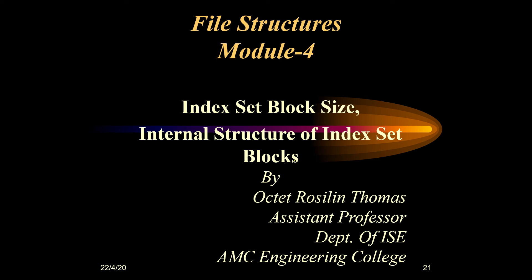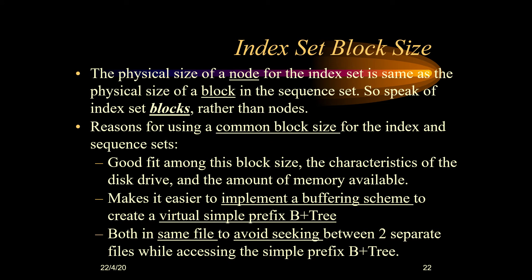In this section we look at index set block size and the internal structure of index set blocks. Block size is important when considering the index set because the size of every node and the size of the blocks inside the sequence set of a B+ tree are almost the same. Using the same block size for both the nodes and the B+ tree is a good fit because it fits more records, which helps reduce seek time, and it helps save blocks efficiently inside the disk drive and memory.